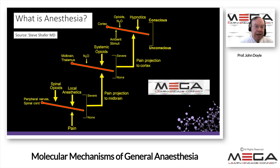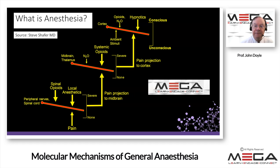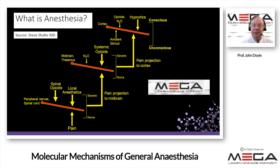Here is another slide from Dr. Schaefer showing the various interactions between local anesthetics, spinal opioids, systemic opioids, and hypnotics, and how they affect the cortex, the midbrain, and the thalamus. There are various projections that occur from the midbrain to the cortex. This is part of the neurophysiology and neuroanatomy of anesthesia — it's very much involved in the neurosciences.